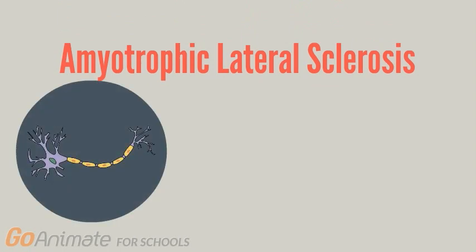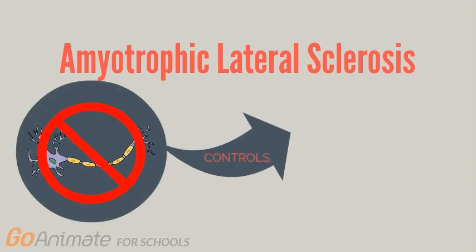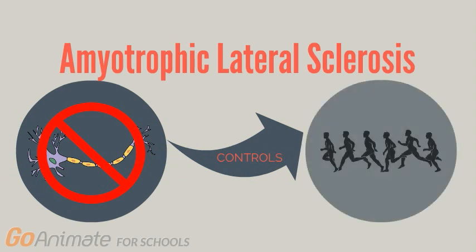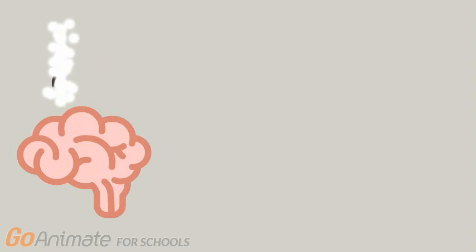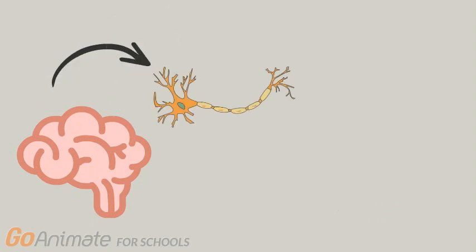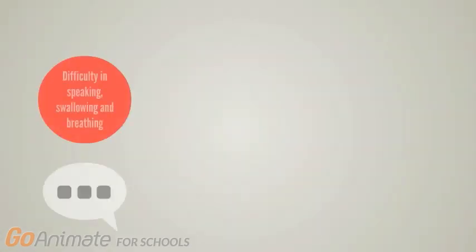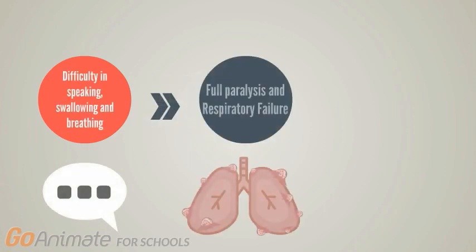Amyotrophic lateral sclerosis is a disease caused by the death of motor nerve cells or neurons, which are specialized cells that control muscle movement and coordination. In ALS patients, their brain can no longer send signals to the motor neurons to control their muscles, making it difficult for them to speak, swallow, and breathe.